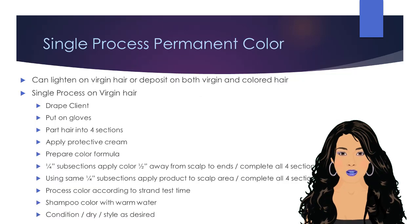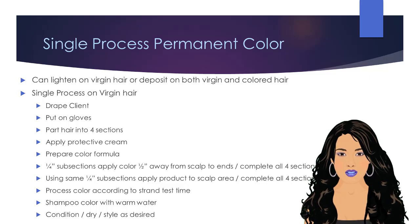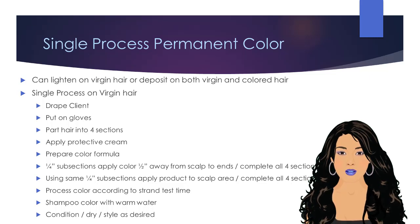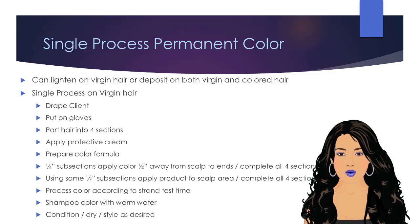The application of a permanent hair color is called a single process hair color. When performed on virgin hair, this application can both lighten and deposit in one process. When performed on previously colored hair, this application can only go darker or deposit color.